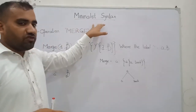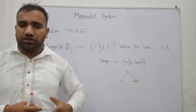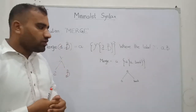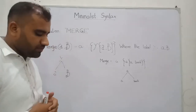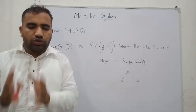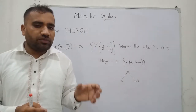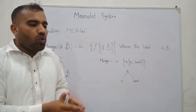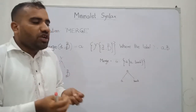In minimalist syntax we have the very basic operation — operation merge. What is operation merge? As you can see on our blackboard, merge means to put together. We have two different categories and the only task of operation merge is to put these two different categories together and assign one of them as the label of the whole category.